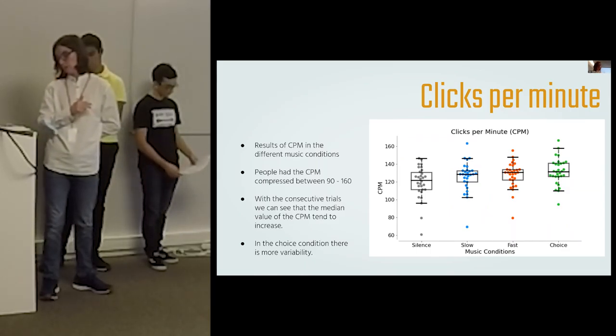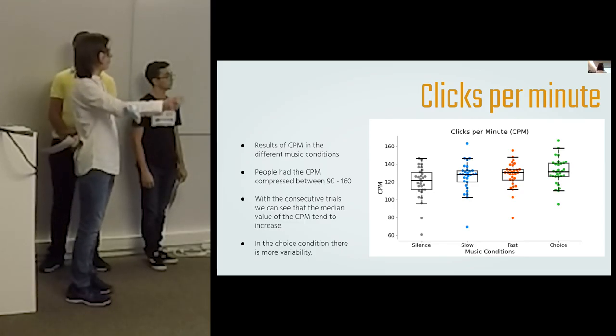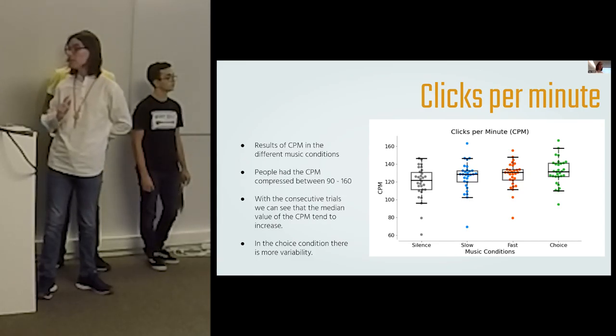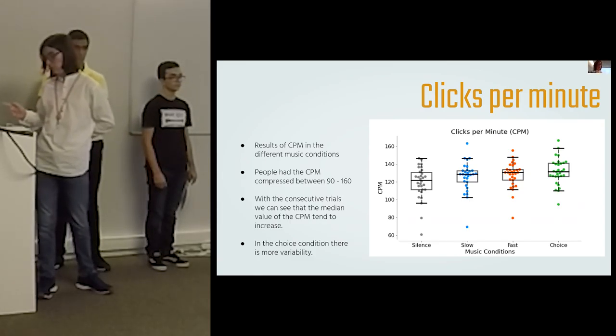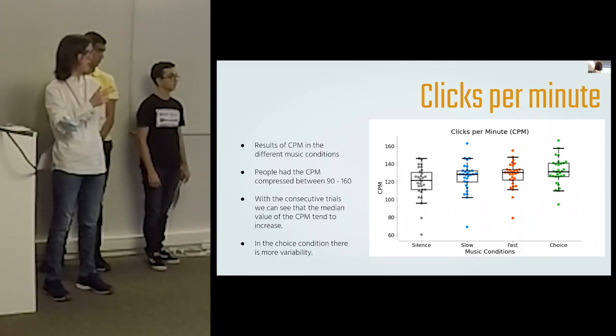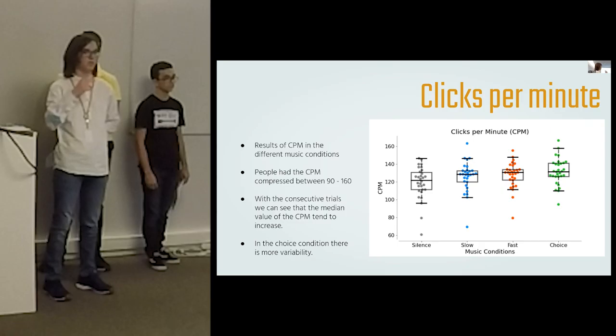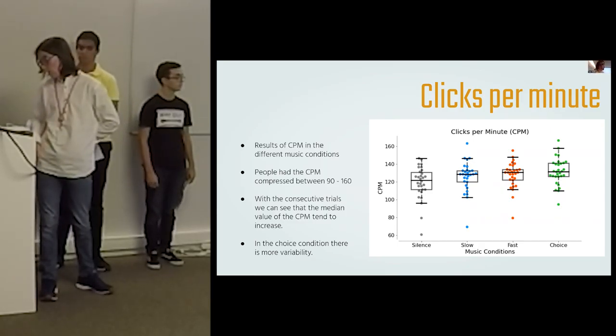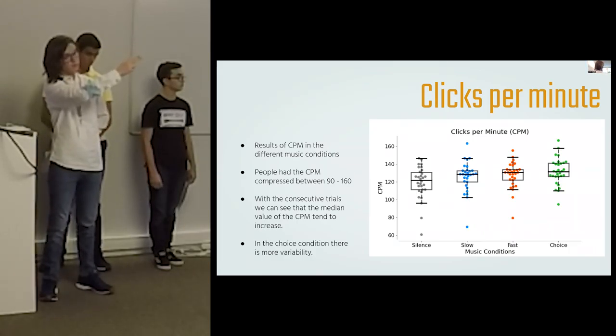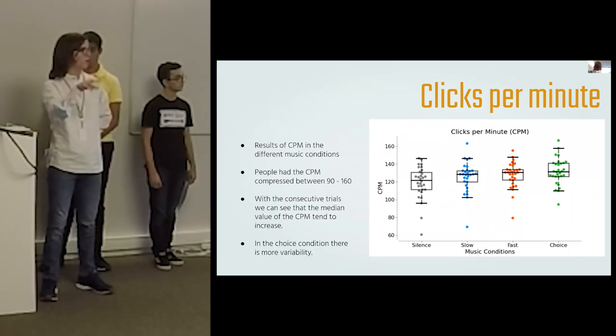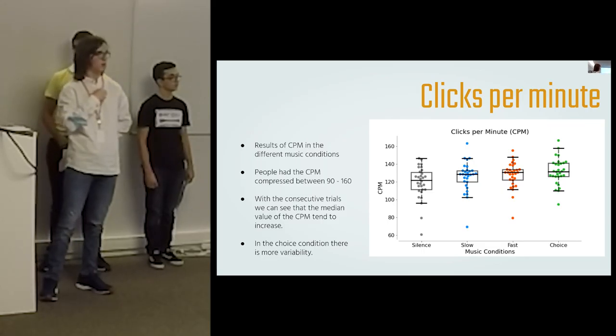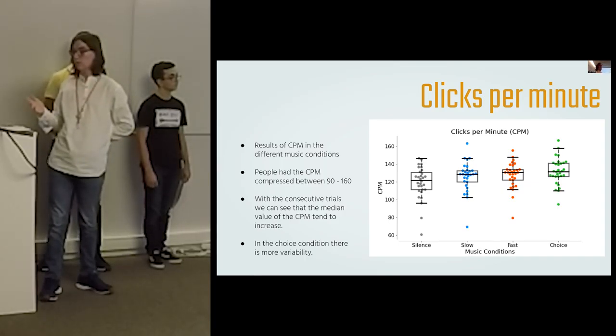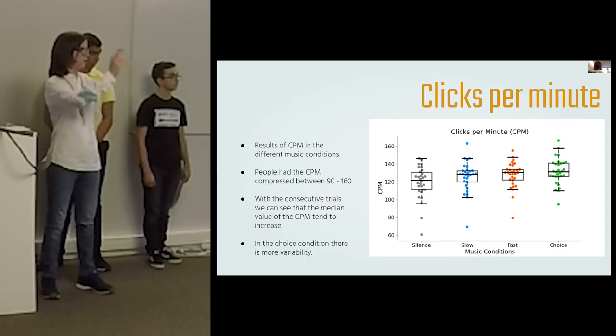Then we can see the results of the clicks per minute, or CPM for short, with different music conditions—you can see silent, slow, fast, and choice. As you may notice in this graphic, we can see a trend of people being faster. This may be because of the BPMs of music, but this may also be due to them getting accommodated with pushing the buttons and the reaction time getting better. You can also notice that in the choice plots there's a lot more variability, because we think that's because the music was chosen by each specific person and BPMs vary a lot. That's why the values scatter a lot.